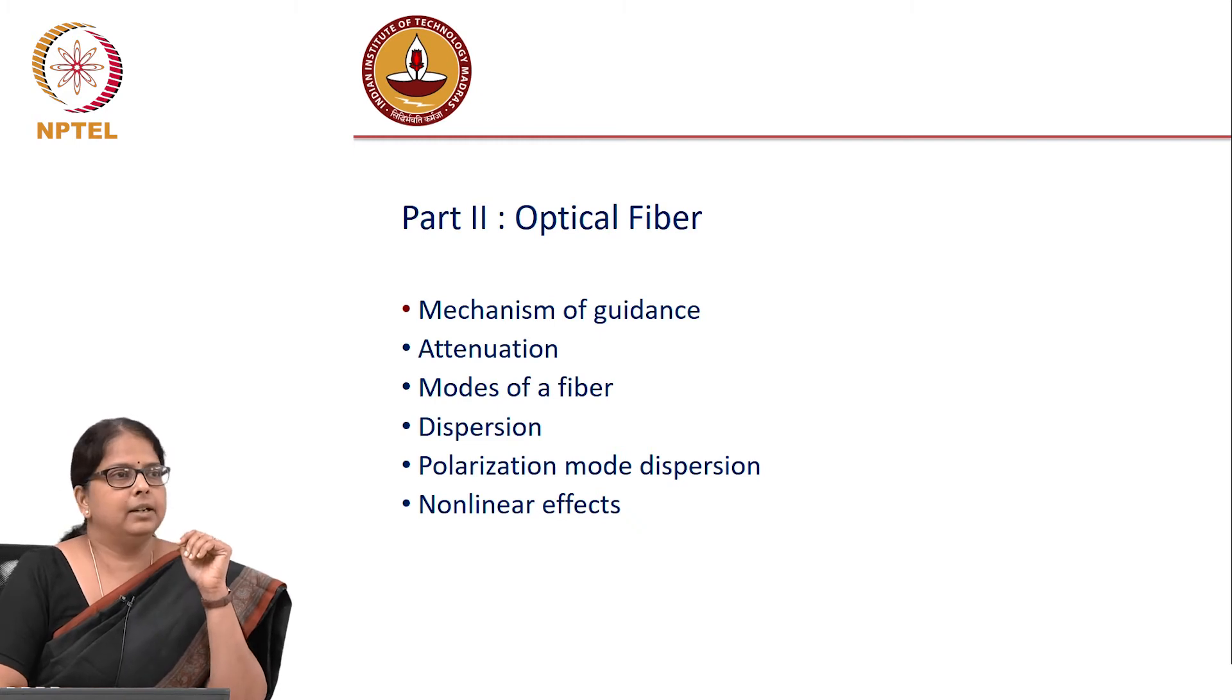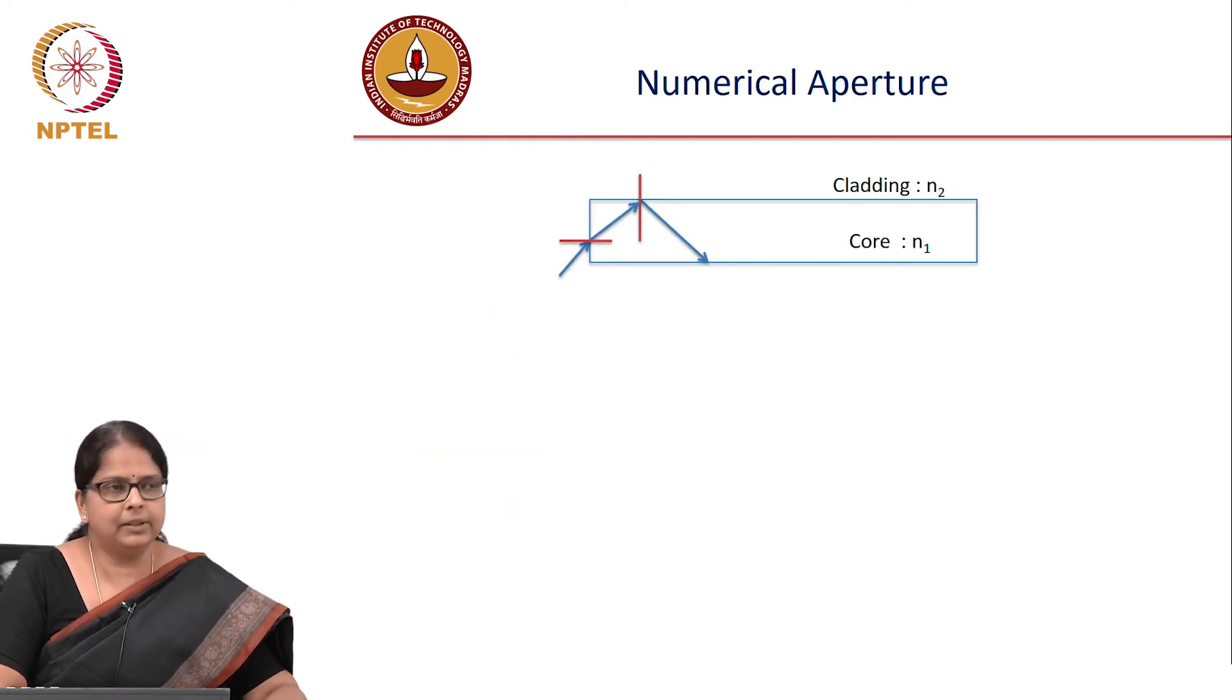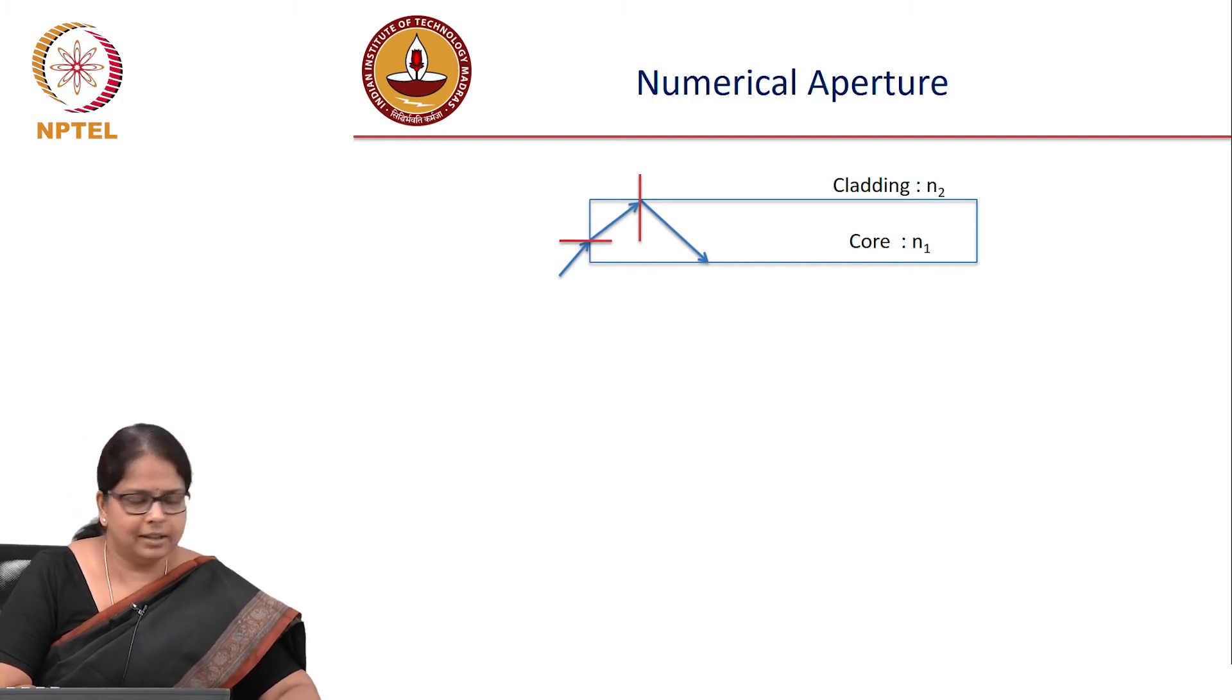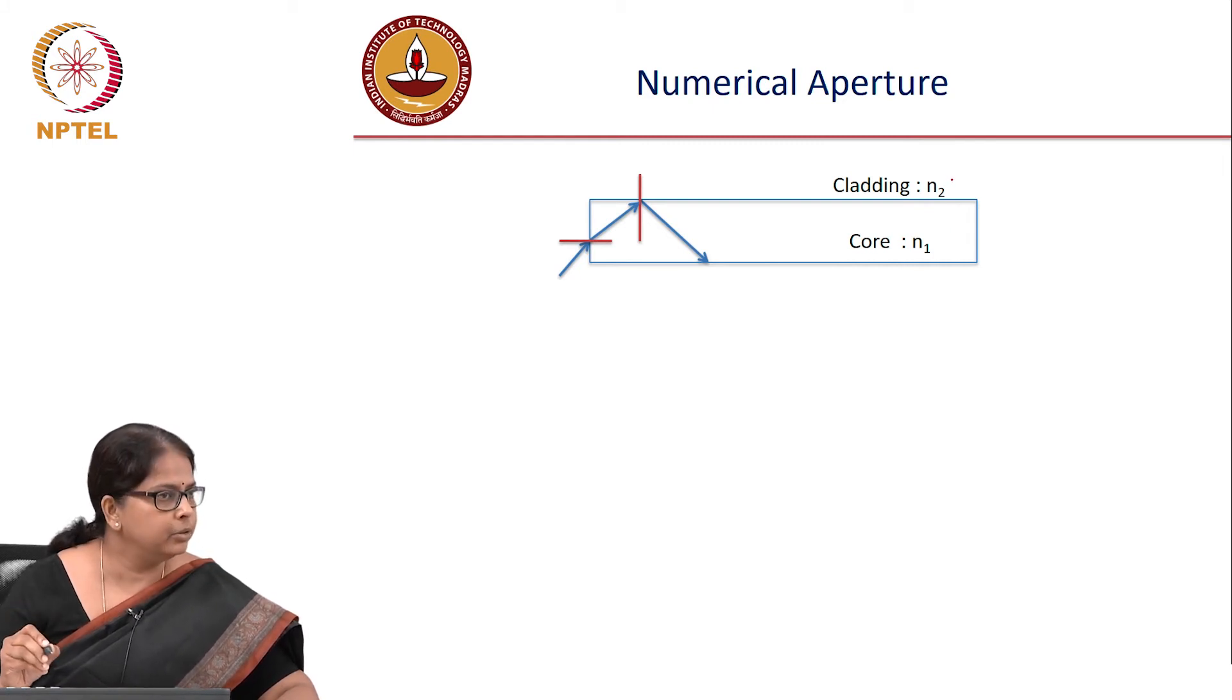We start with the mechanism of guidance, something everyone is familiar with. In a typical optical fiber, you have a core—of course, the fiber is not of this short length; this just shows a section. You have a core of refractive index n₁ and a cladding of refractive index n₂.